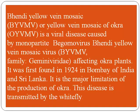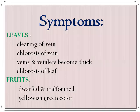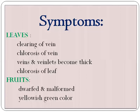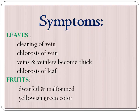This disease is transmitted by the whitefly. The symptoms of this disease are mainly found on the surface of the leaf. There is clearing of the veins, chlorosis of veins and leaves, and the veins mainly become thick. Chlorosis of the leaf is also commonly seen.